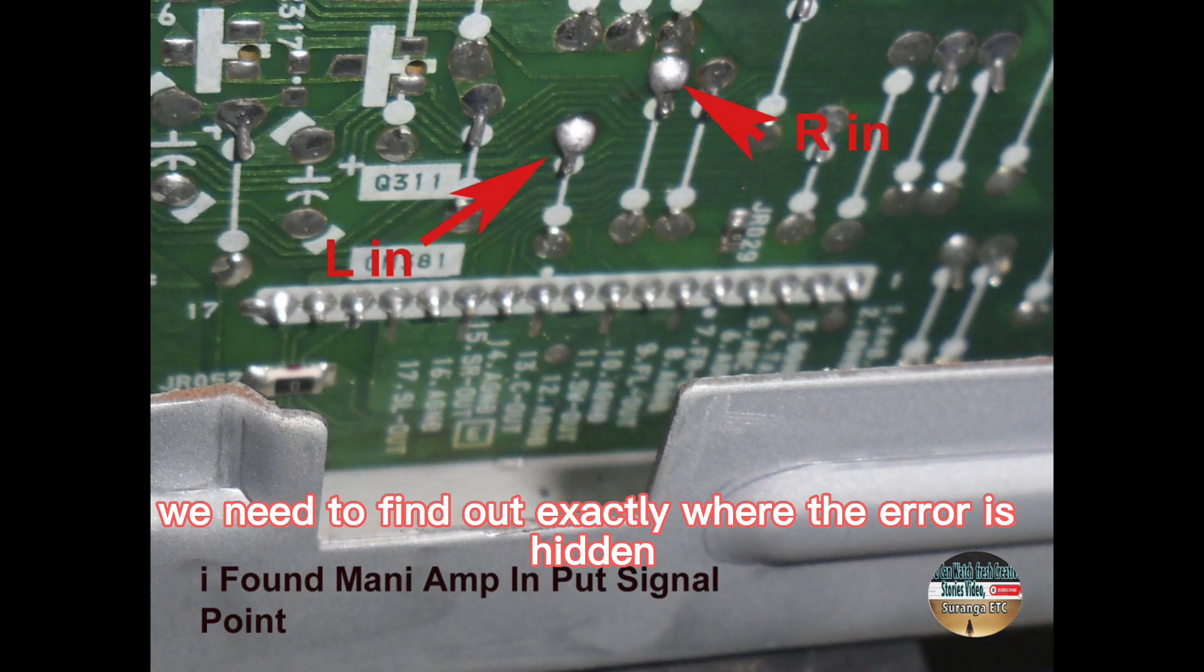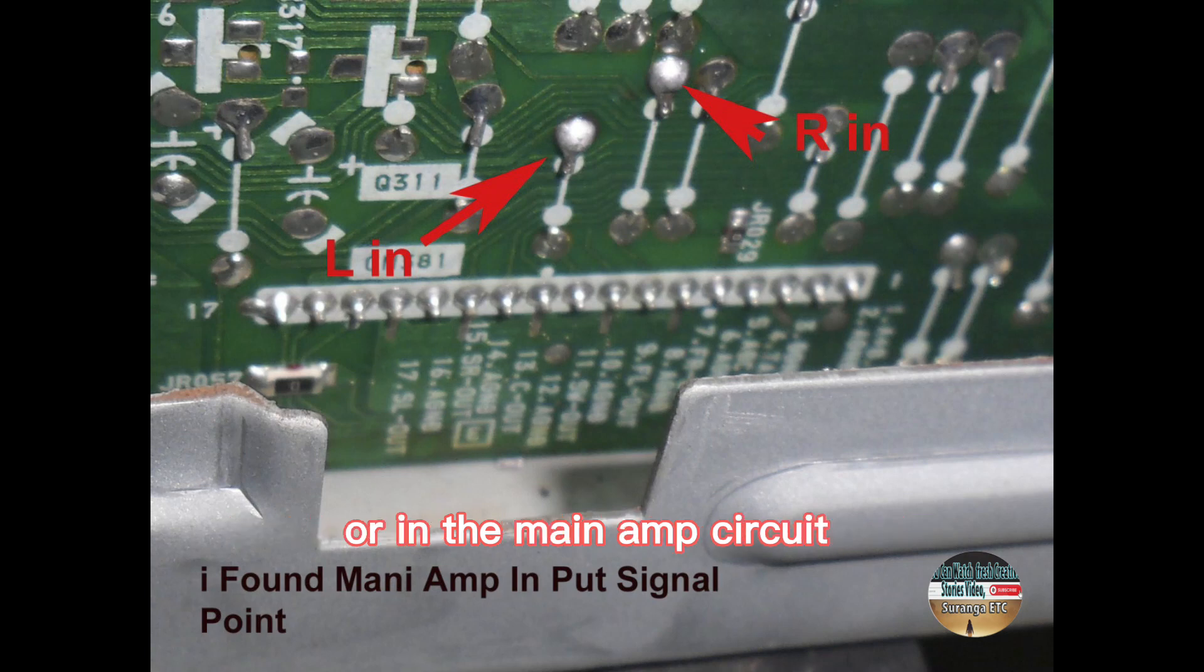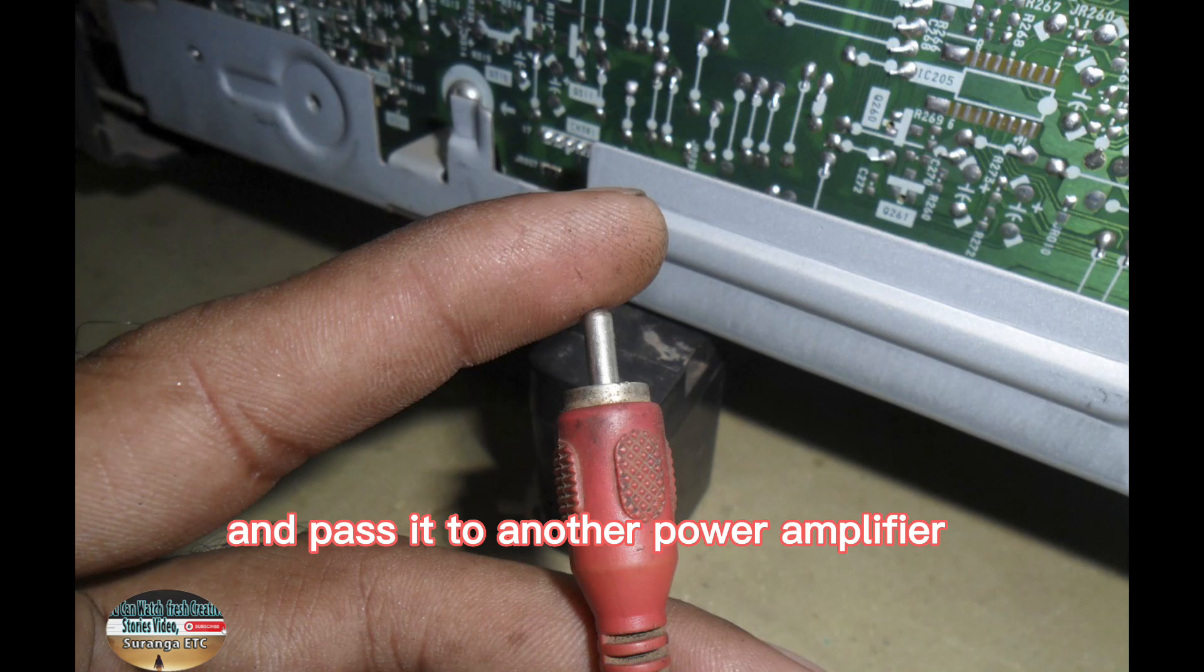Next, we need to find out exactly where the error is hidden. That is, whether it is in the preamp side or in the main amp circuit. For that I found main audio RL channel signal input point go to the main amp. Look at this photo frame. I decided to get from the two main this LR audio signal points and pass it to another power amplifier to test the sound.